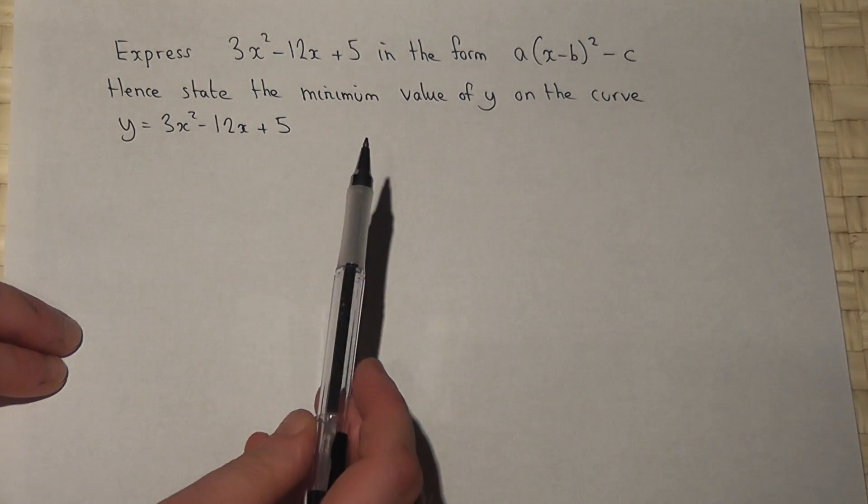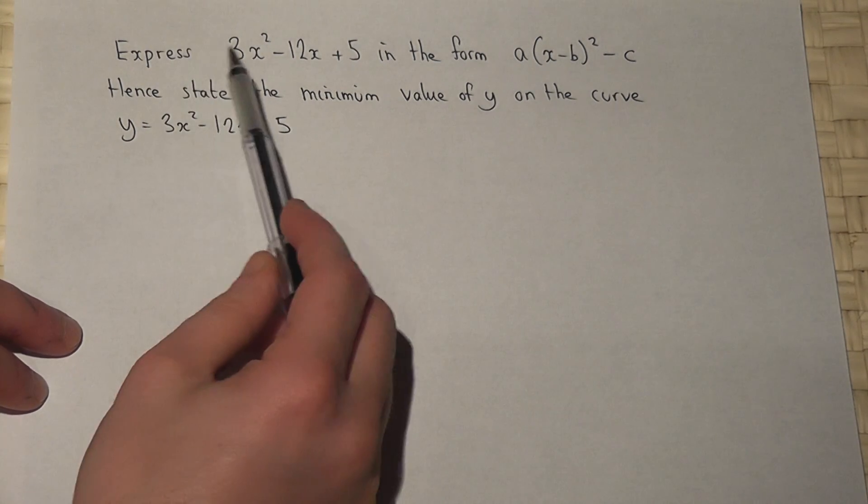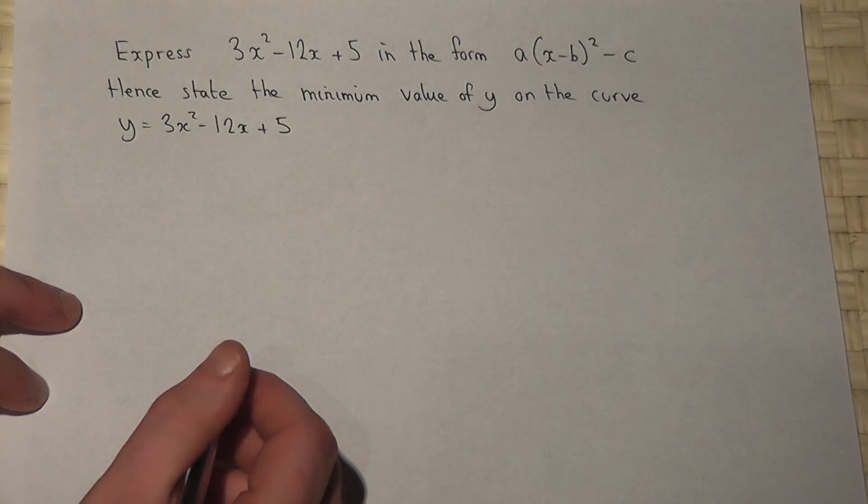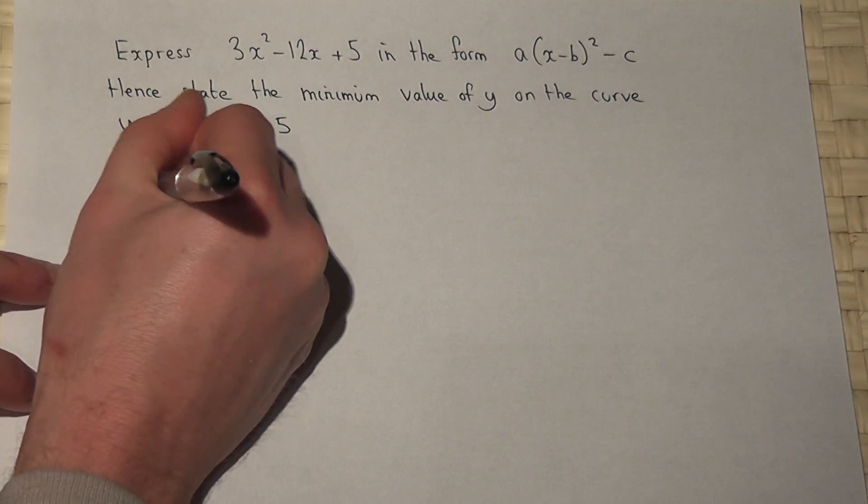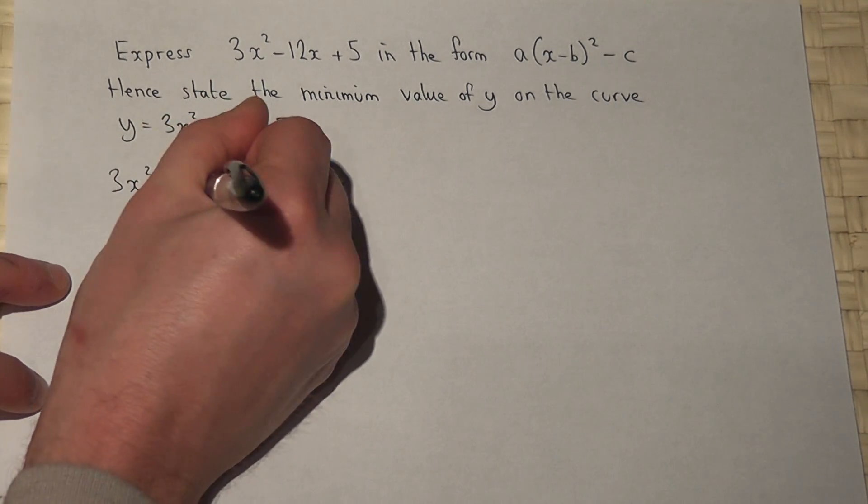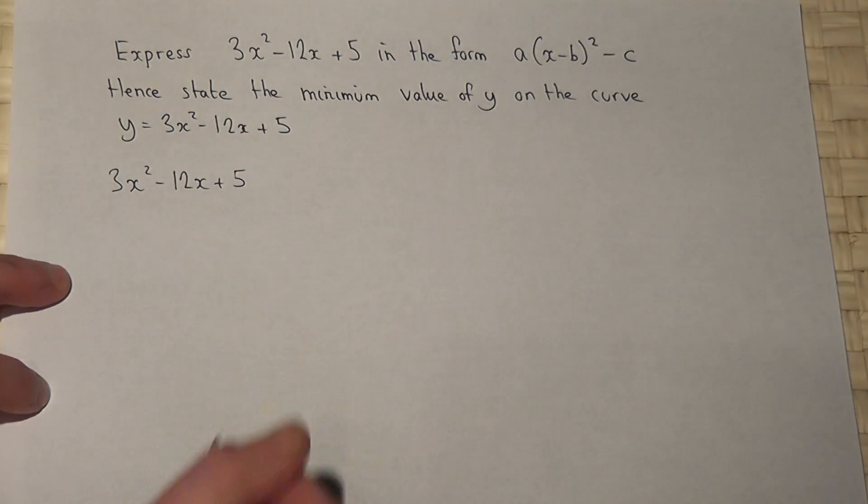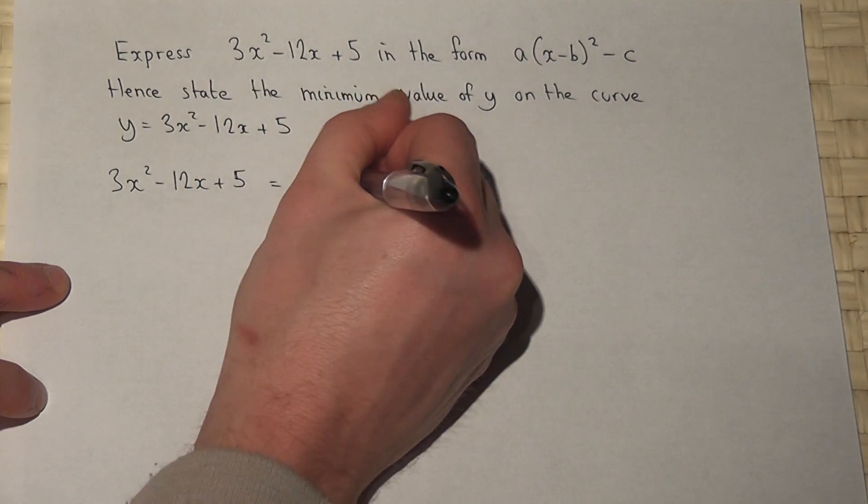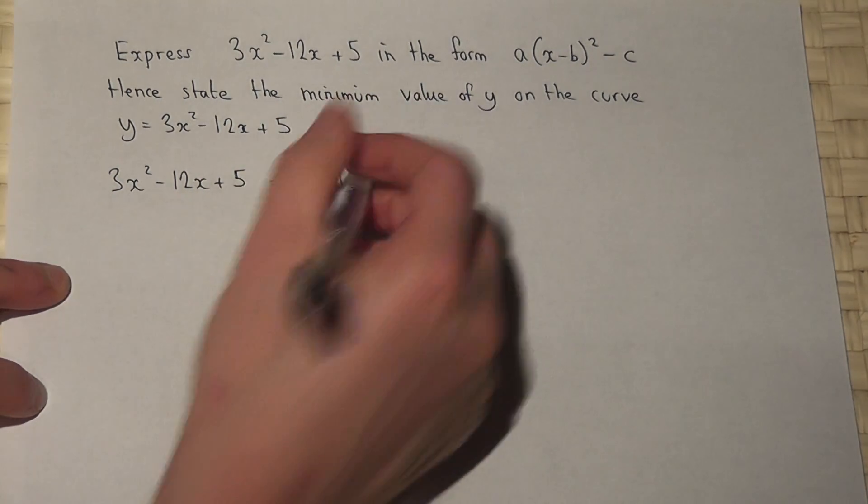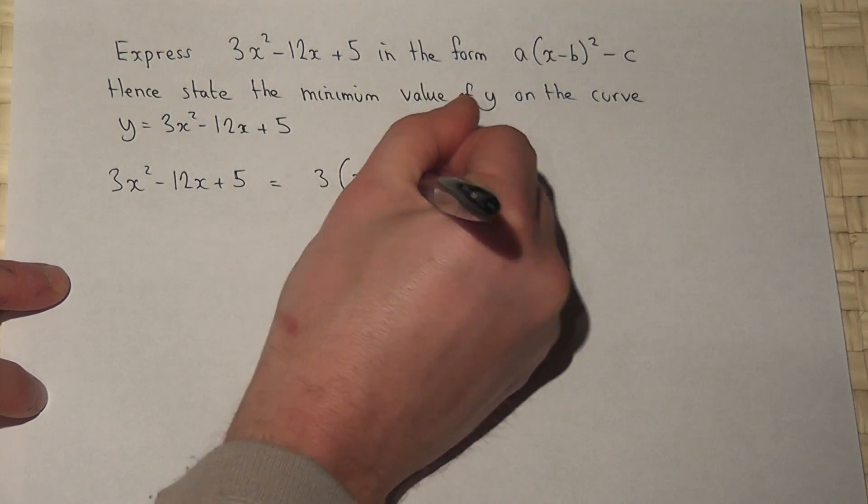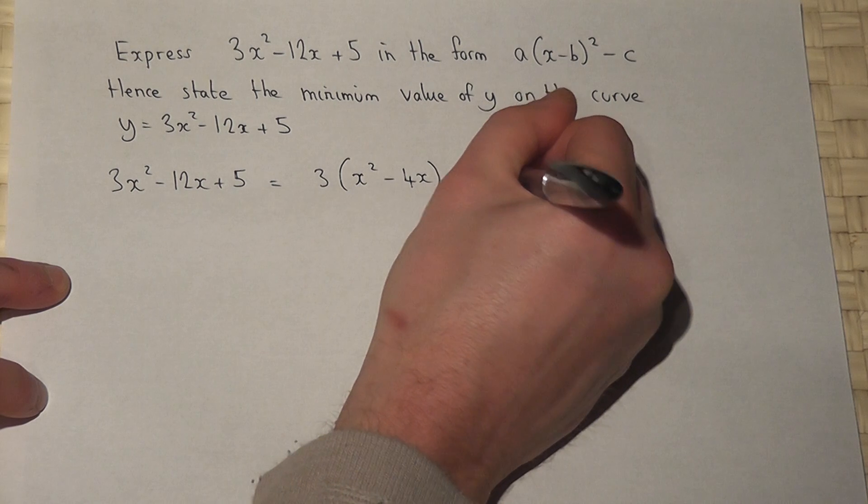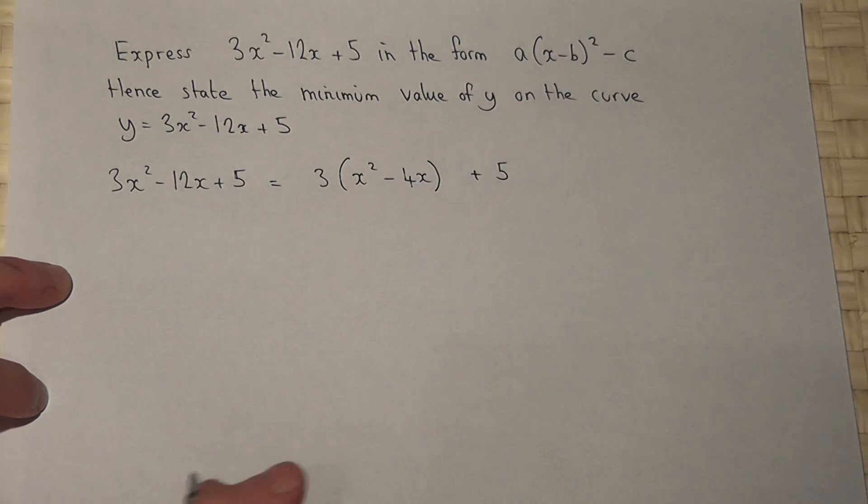In this question, we're first asked to complete the square on this expression. 3x squared minus 12x plus 5 can be written as 3x squared, take away 4x, and I will leave the plus 5 outside.